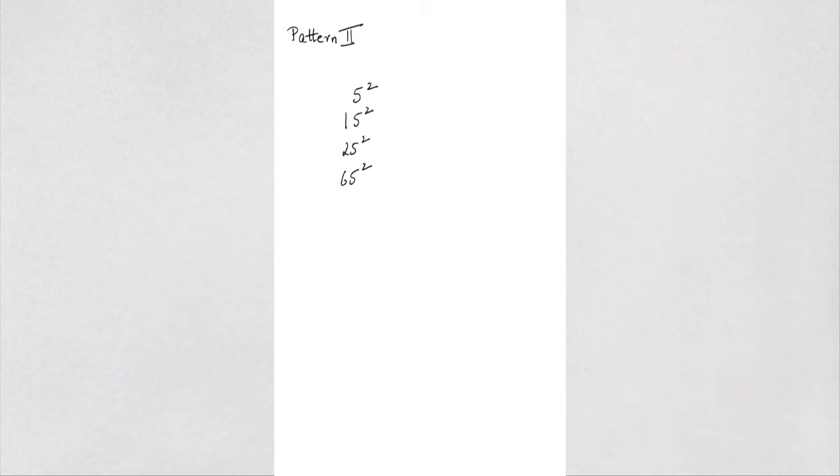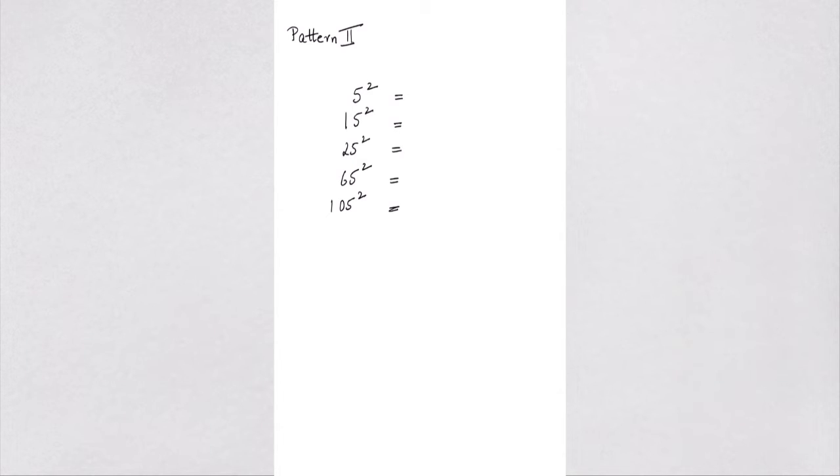The next thing we are going to learn is a cool trick on how to find the square of numbers that end in a 5. For example, we have 5 squared, and that's 25 — pretty straightforward. So let's take bigger numbers: 15 squared, 25 squared, 65 squared, and one more biggie, which is 105 squared. The first thing we do is look at the unit's digit, which is 5 in each of these cases, and 5 squared is 25.